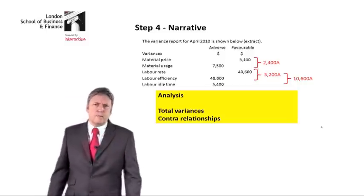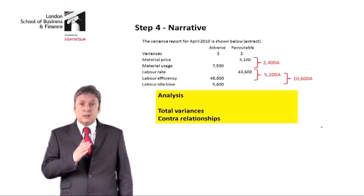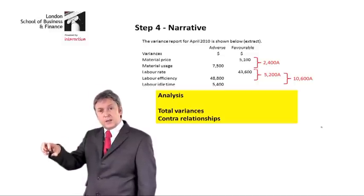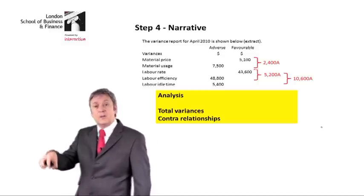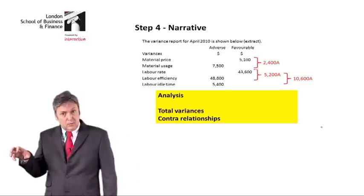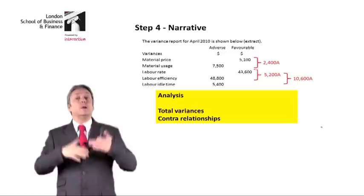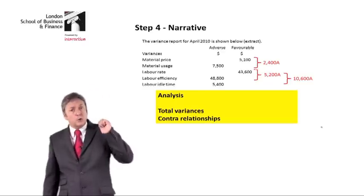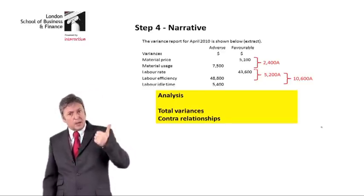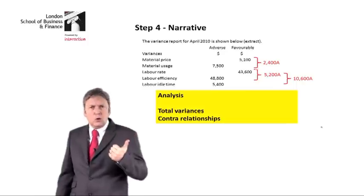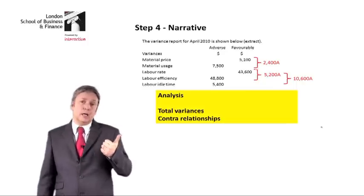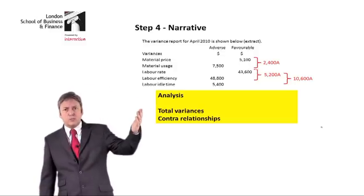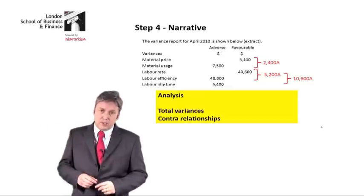Interestingly, with the labour variances, we would typically say that idle time variances are kept separately — they're simply due to the fact that we may work different numbers of hours than we actually pay. But they may have a bearing on the question if we're given further information. What I want to look at are overall total variances to get the big picture, and in particular I'm looking for contra-relationships — the idea that if you have a favourable variance in one place, it may well lead to an adverse variance in another.